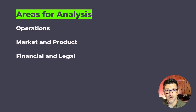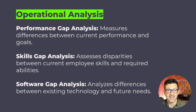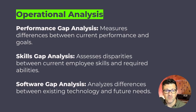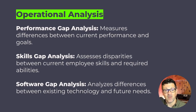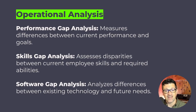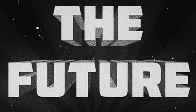These are the different areas for analysis, grouped into three general categories: operations, market and product, and financial and legal. Inside operations, there are three different areas for gap analysis: performance gap analysis, which measures the difference between your current performance and your goals; skills gap analysis, which looks at disparities between your current employee skill set and the abilities required to reach your goals; and software gap analysis, which analyzes existing technology versus what you might need for the future.